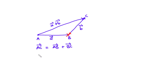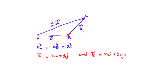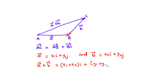Given that vector A is equal to X1·i plus Y1·j, and vector B is equal to X2·i plus Y2·j, if you want to find the resultant vector, you are going to add the X and Y components of the vectors involved. Now let's try some examples.